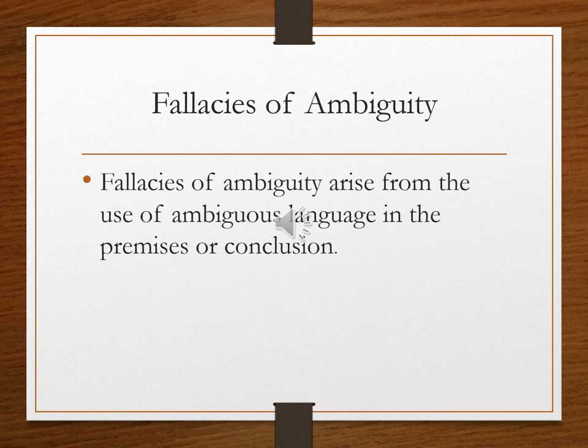We're going to shift now to the fallacies of ambiguity — we only have two fallacies in this category. Initially you might have a little bit of a challenge distinguishing them, but they are clearly different from each other. Fallacies of ambiguity involve language and its main feature of being ambiguous. It's very hard to be extremely precise in expression, and oftentimes what we say or write can be interpreted in different ways. The two fallacies we're looking at are equivocation and amphiboly.